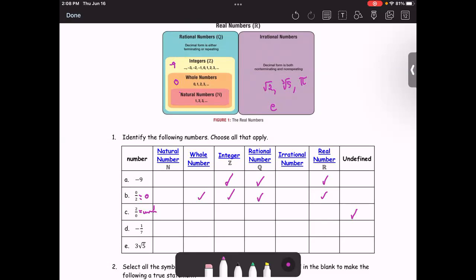Part D, negative 1 over 7, so it's not a natural number, it's not the whole number, and it's not an integer. If it's not an integer, but it's still in the decimal form or the terminating or repeating decimal. So, we're going to use negative 1 over 7 as one of the rational numbers. If it is the rational number, it's also the real number.